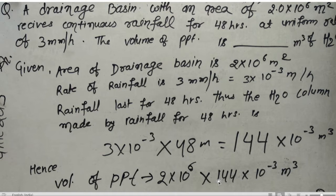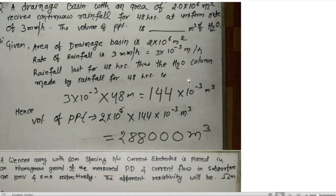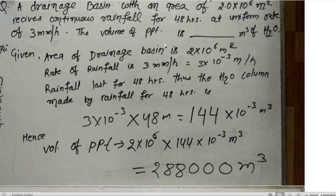When we multiply rate by time — 3×10⁻³ meter per hour by 48 hours — it becomes 144×10⁻³ meter. This is the water column height from the total rainfall. Now, the volume of precipitation equals total area (2×10⁶ meter square) multiplied by this water column height (144×10⁻³ meter).